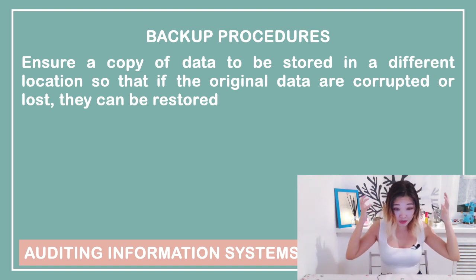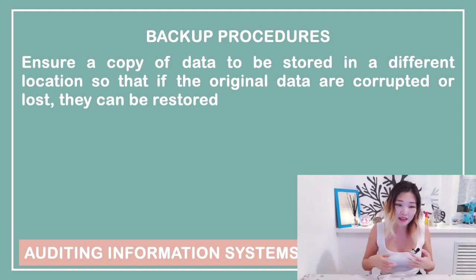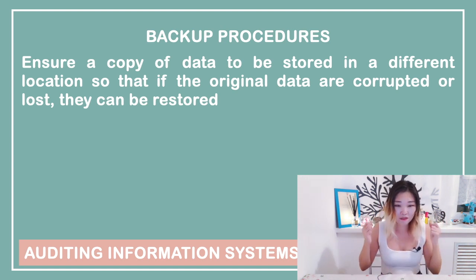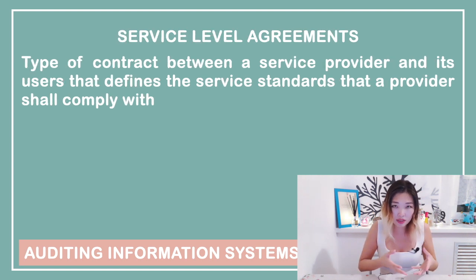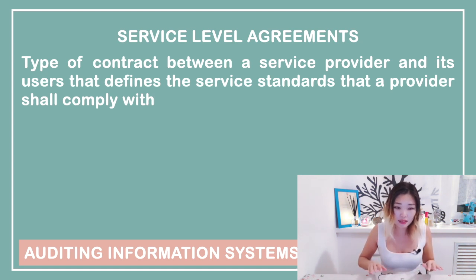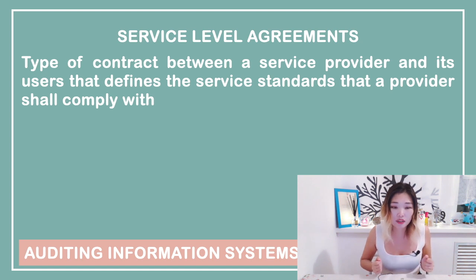Backup procedures are also an interesting topic I will cover in future videos in more detail, including types of backup, advantages and disadvantages of each type, and tools you can use. A service level agreement (SLA) is an agreement between a service provider and a client that specifies service performance standards. Here it is mentioned as a corrective control, referring to break-fix SLAs that specify procedures for fixing the system in case of failure.